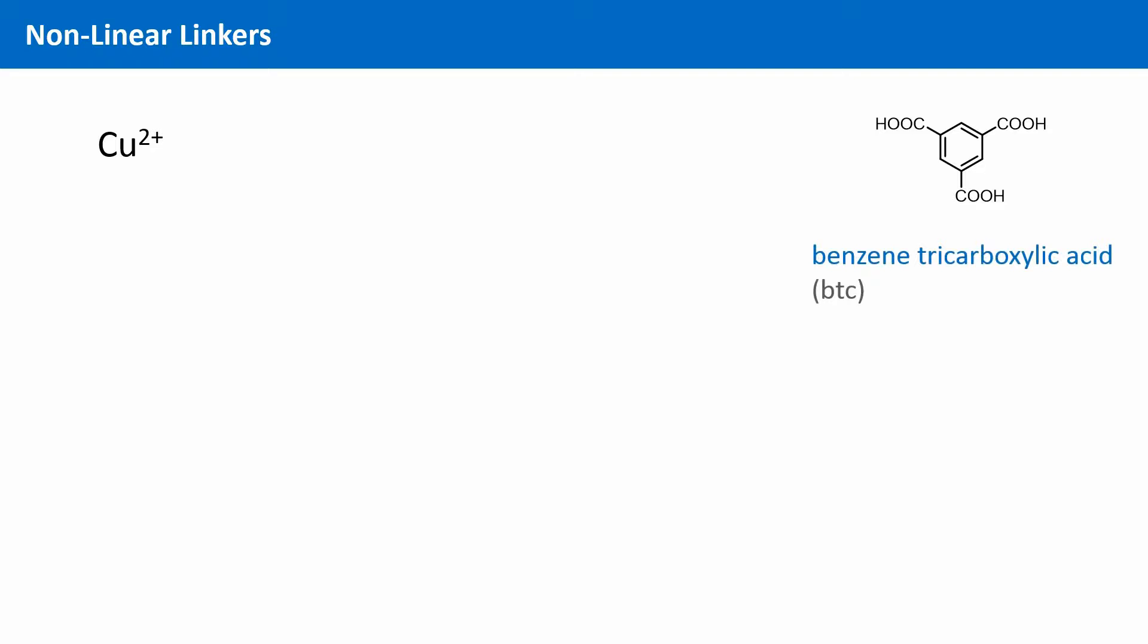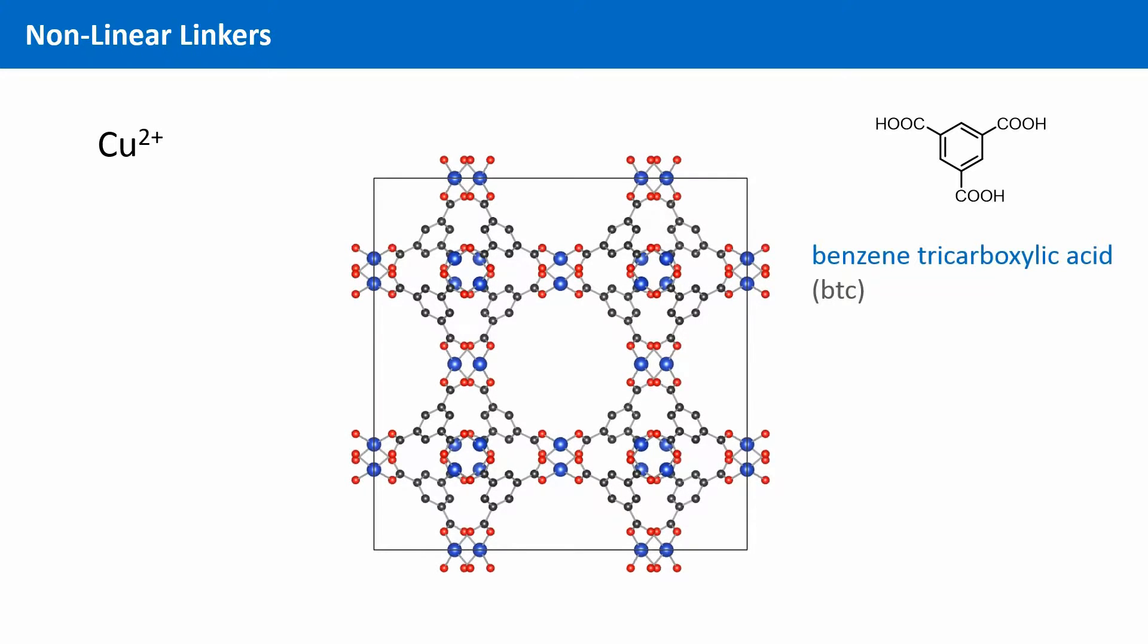The BTC linker is in fact used in combination with copper 2 plus in one of the most prominent MOFs. This MOF was named after the university where it has been discovered, and this was the Hong Kong University of Science and Technology. So its name is HKUST-1. Sometimes it is named after its constituents, copper BTC. Copper BTC can be prepared very easily without much effort. And it is quite stable. And I guess that's why it is so popular among chemists who are interested in MOFs.